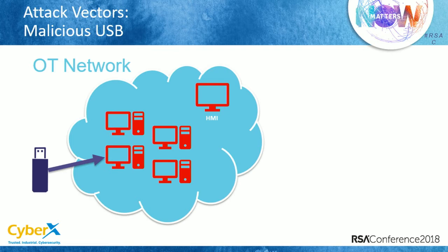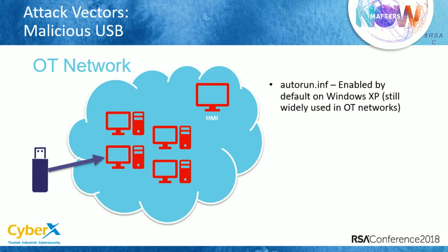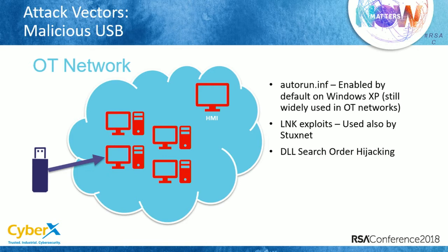All these attacks — like running an autorun.inf, LNK exploits, or even DLL search order hijacking of industrial software — are possible in these networks because it's really a mess to upgrade an operating system inside an industrial network. There are compatibility problems, problems with new software; it's a critical process, you can't just stop the process and update your Windows. You need to stop the factory. So no one does that, and they still have Windows XP machines there.